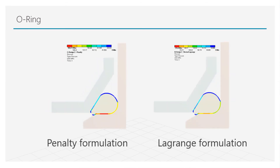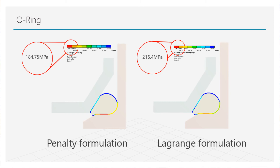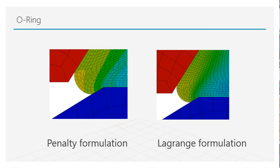Now let's shift focus to the second design, which has a small inclination cut into it. We look at the contact pressure as calculated by both formulations. Here, we notice a big difference in the values calculated by both formulations. This is because when the O-ring deforms, it starts flowing about a sharp corner point. Since the Penalty formulation is more forgiving in terms of penetration, it allows the O-ring material to penetrate into this section, resulting in lower contact pressure calculations. The same design, when solved using the Lagrange formulation, results in nearly zero penetration and therefore a more trustworthy contact pressure calculation.